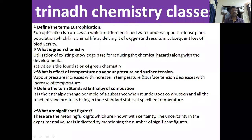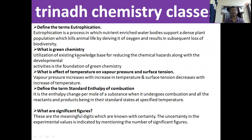The next question: define eutrophication. Eutrophication is a process in which nutrient-enriched water bodies support a dense plant population, which kills animal life by depriving it of oxygen and results in the subsequent loss of biodiversity. Next: what is green chemistry? Utilization of existing knowledge aimed at reducing chemical hazards along with the development of sustainable activities is the foundation of green chemistry.